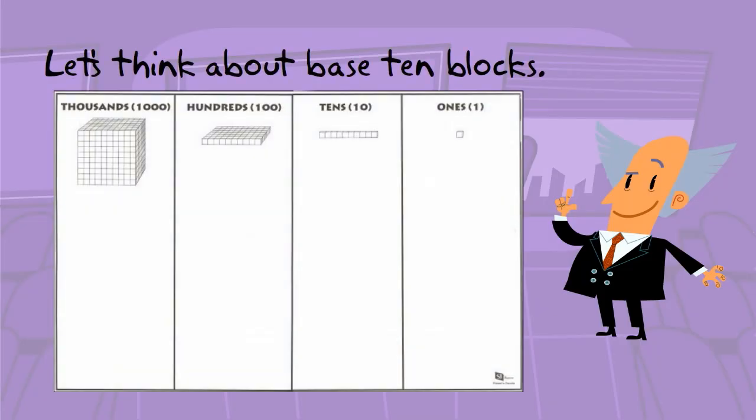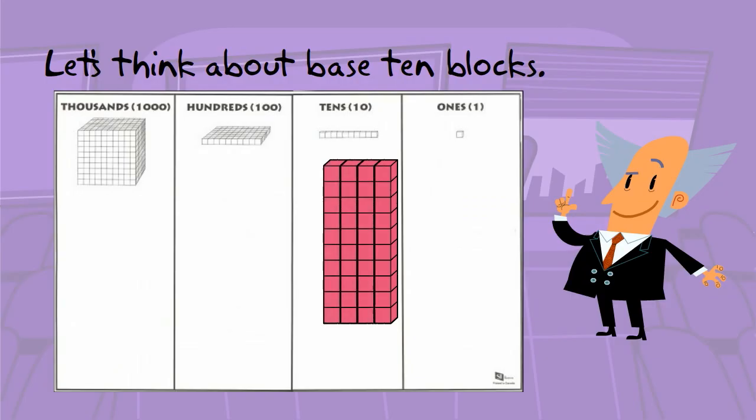Let's think about our standard base 10 blocks. When we're in the tens place value, we could take a 10 rod and multiply it by a digit such as 5. 5 times 10 would be 50. The multiple here is 50.